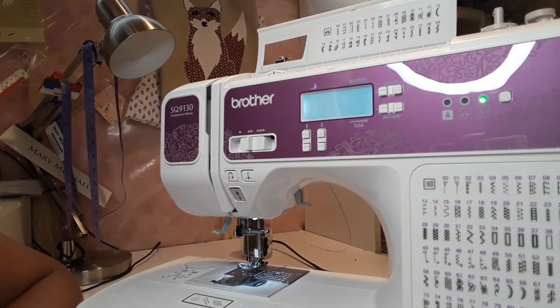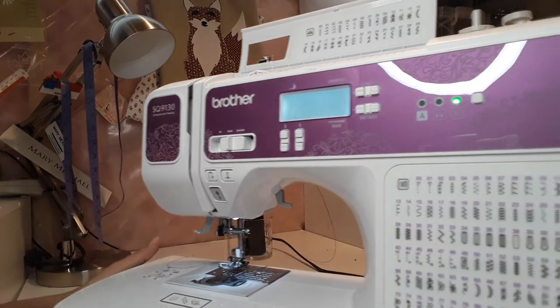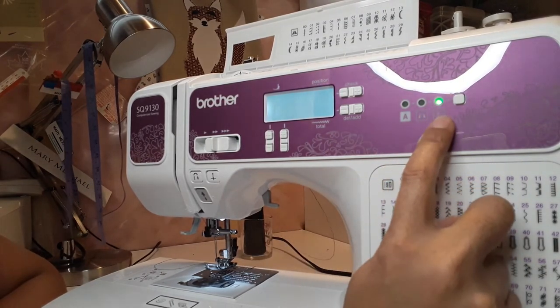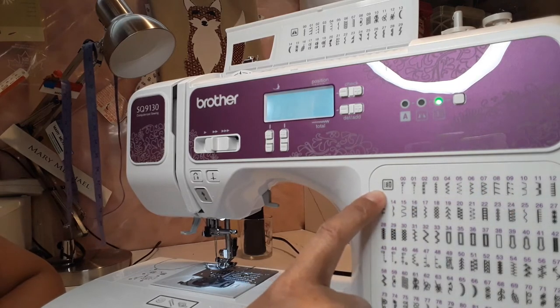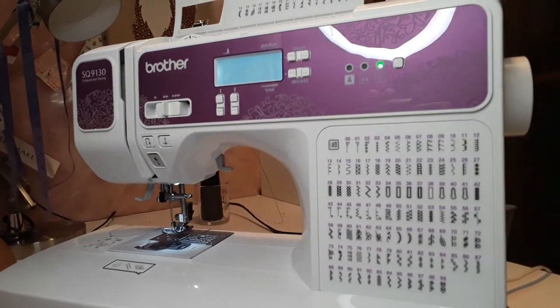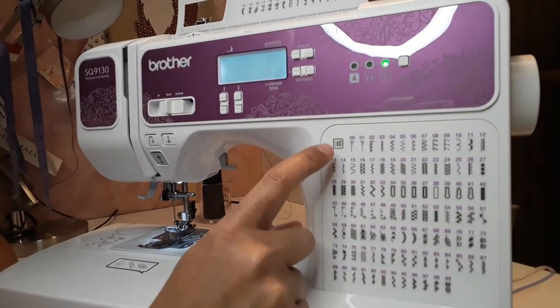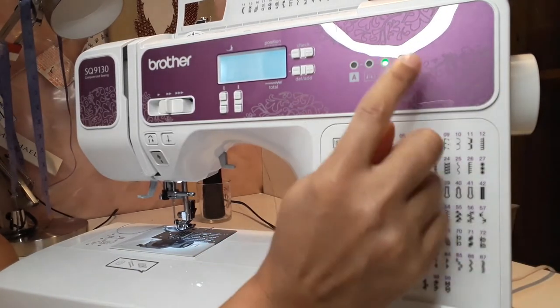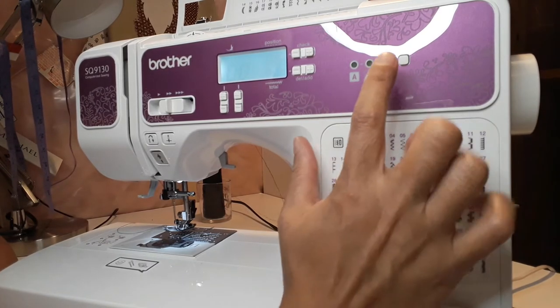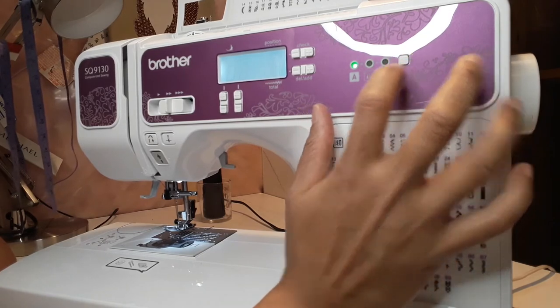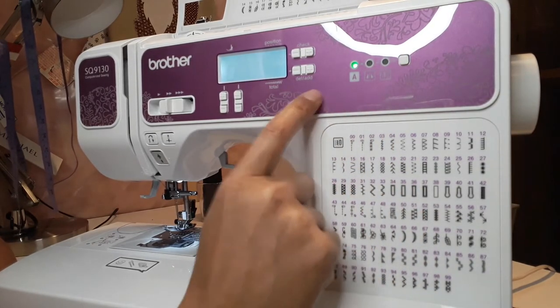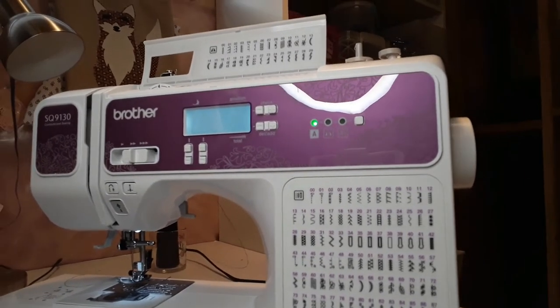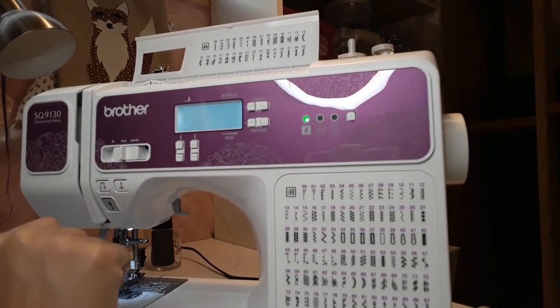Let's get started. Now, as you see here, once I turn my machine on, there's a green light that pops up in this section. That means I'm going to use anything within this square or rectangle, all the stitches under this category. If I would like to use my letters, obviously the one with letter A, I'm going to choose the letters.